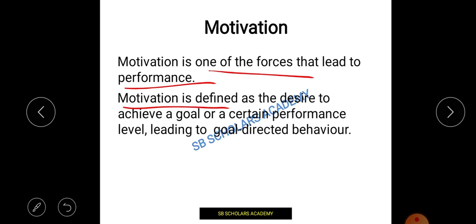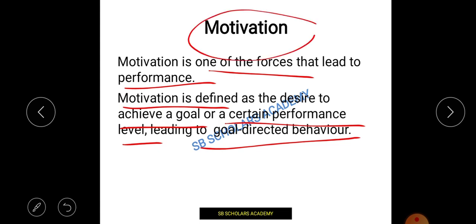We can define motivation as any kind of desire that directs our performance toward achieving our goal — a goal-directed behavior. For example, my ultimate aim is to become a professor, so my first step is to clear my NET. That ultimate goal will be achieved when I clear the NET. So motivation is a force, a drive, that leads to goal-directed behavior.